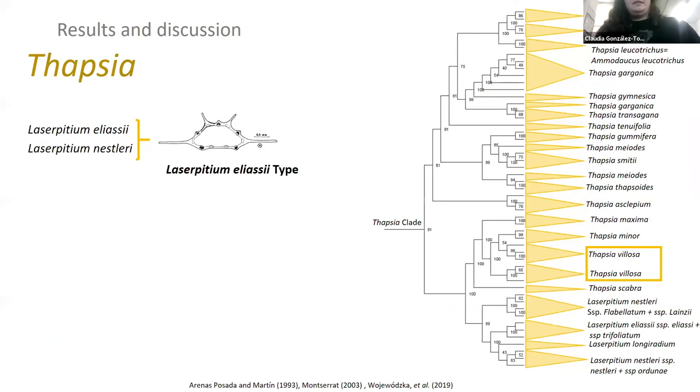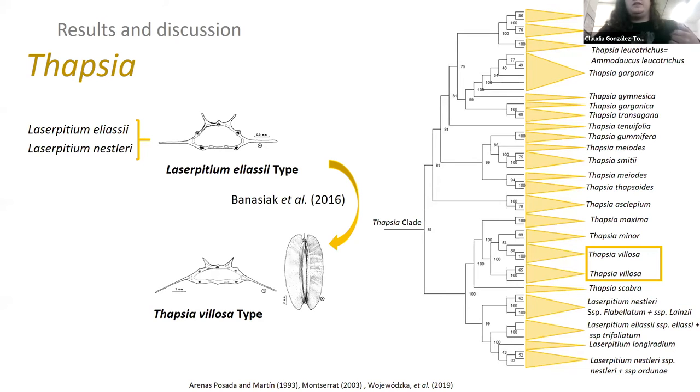Finally, the Thapsia clade. The Thapsia clade is really a complicated clade in general. We found that two of our Laserpitium species fell within this clade, hence they should be transferred to Thapsia, so we supported the previous finding of Magee. We also found that the endemic Laserpitium from Sierra Nevada, Laserpitium longiradium, should also be included in Thapsia.